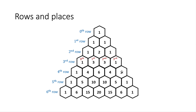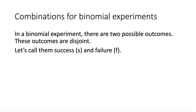Now let's talk about Pascal's Triangle and how it relates to combinations. In order to get there, I'm going to mention something called binomial experiments. In a binomial experiment, there are two possible outcomes and the outcomes are disjoint. In general, I'm going to call these outcomes success and failure. Let me give you some examples of a binomial experiment.